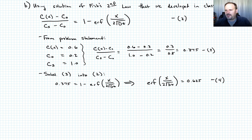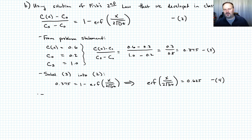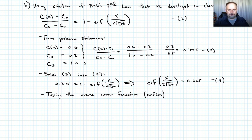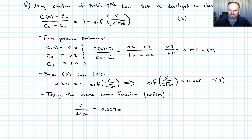Now I need to find what argument makes the error function evaluate to 0.625, so I take the inverse error function of 0.625. I'm using MATLAB for this — the function is erfinv — but you could also use a table. Taking the inverse error function of 0.625 gives x over 2 times the square root of Dt equal to 0.6273. We'll call that equation 5.